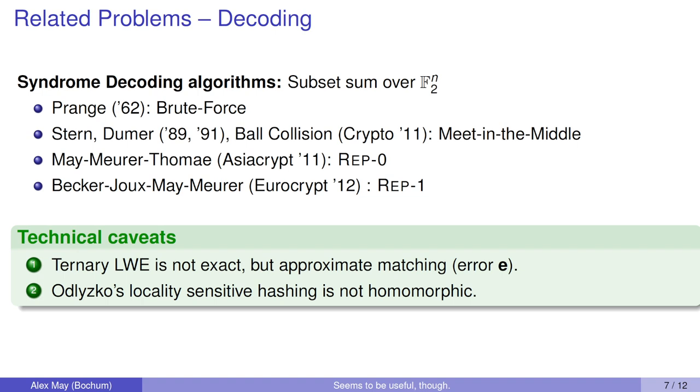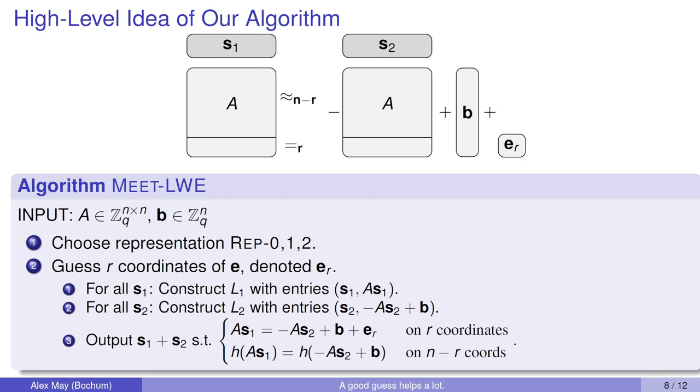Since these representations were so fruitful for subset sum type problems, and since ternary LWE is also kind of a subset sum problem because we have to find a ternary linear combination of the columns of A, the main idea is to use these representations here as well. But there are two technical caveats. For ternary LWE it's not exact matching, but we have approximate matching. There are some errors that we don't know, which is different from subset sum. There's another technical caveat because Odlyzko's locality-sensitive hashing is not homomorphic and that causes some problems.